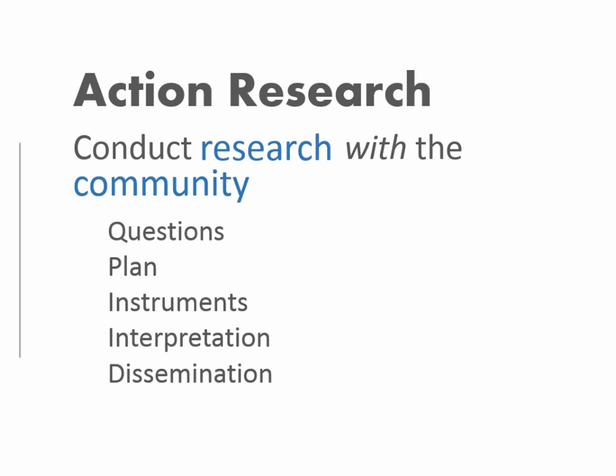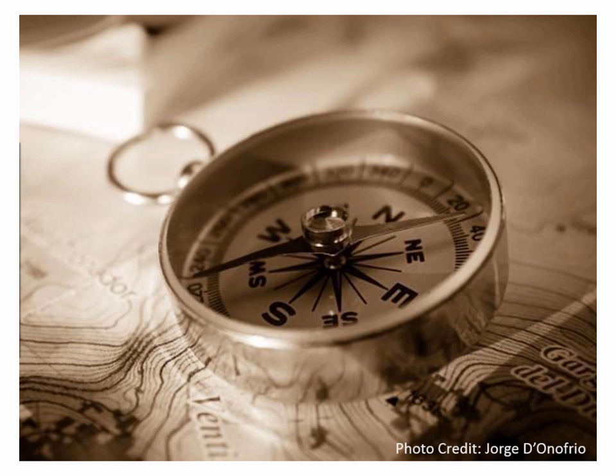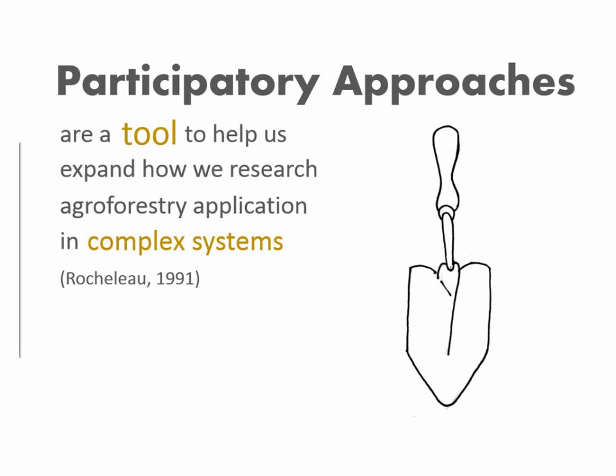Action research is a little different from citizen science, where a researcher sets up an experiment and invites the community to participate. In action research, the community is involved from the very beginning to the extent they would like. Rather than just using literature as our compass, we include the community in guiding where the research goes. These participatory approaches can be important tools for agroforestry — Rocheleau published on this in 1991, though in an international context.